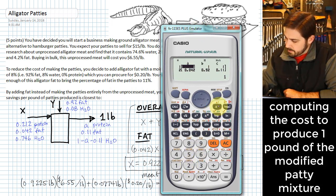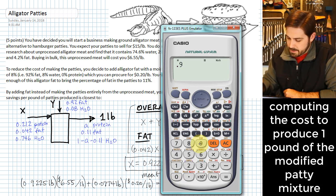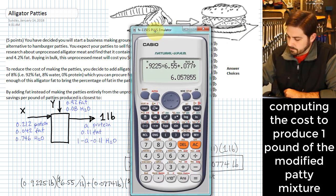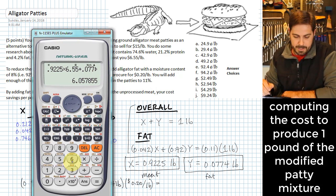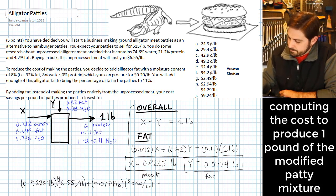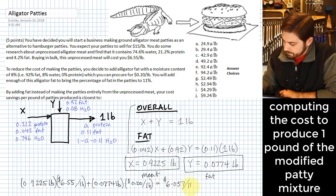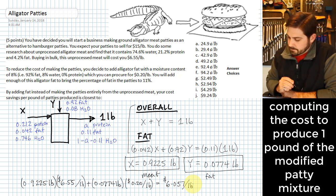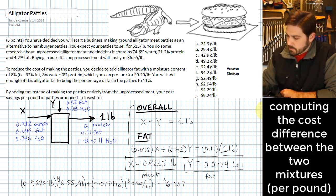So when we add these up, we will have 0.9225 times 6.55 plus 0.0774 times 0.2. Okay, and this tells us then that the cost per pound is going to be $6.057 per pound. I guess I don't need the per pound on there because that's assumed that we're doing this per pound.